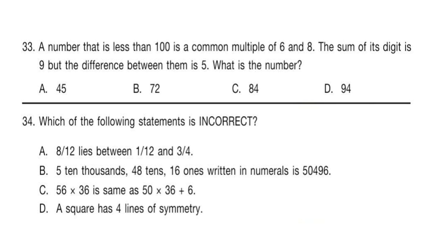Question 33: A number that is less than 100 is a common multiple of 6 and 8. The sum of its digit is 9 but the difference between them is 5. What is the number? Question 34: Which of the following statements is incorrect? Read the statements and select your answer.